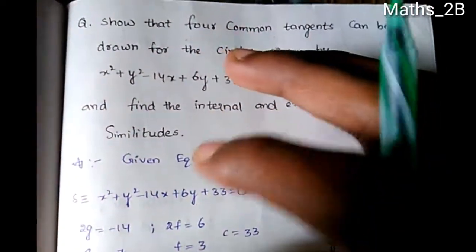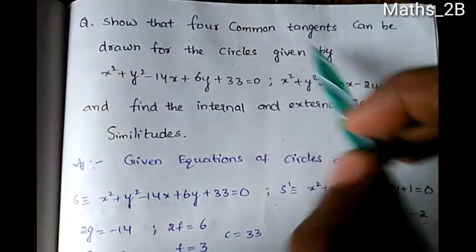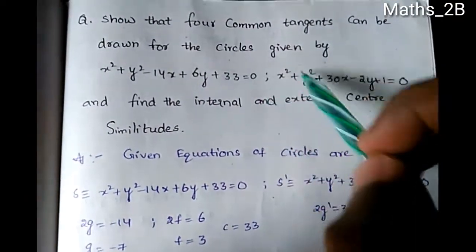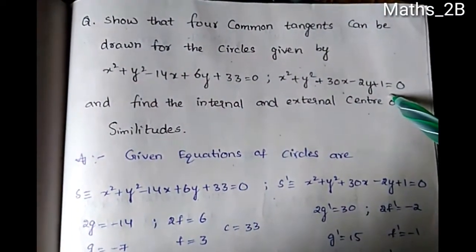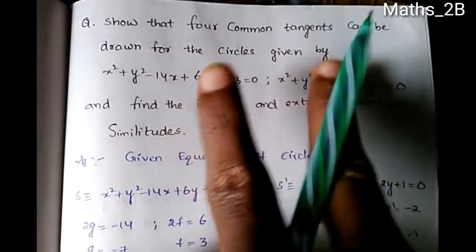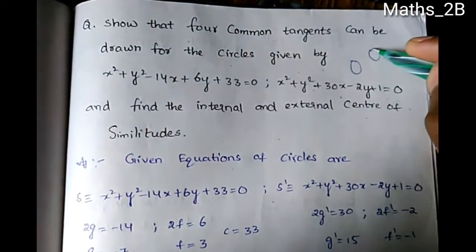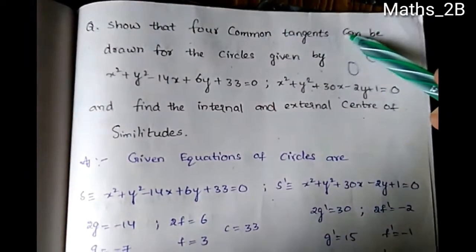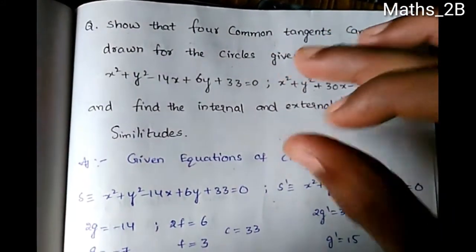We are going to show that four common tangents can be drawn for the circles given by x² + y² - 14x + 6y + 33 = 0 and x² + y² + 30x - 2y + 1 = 0. We have two equations of circles.